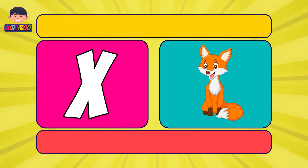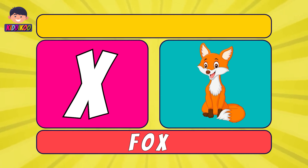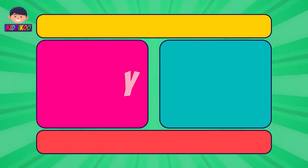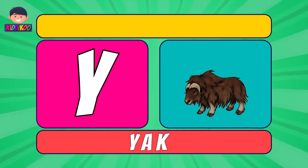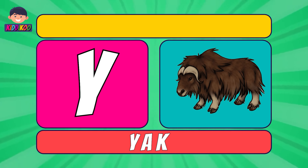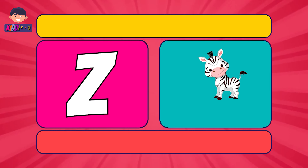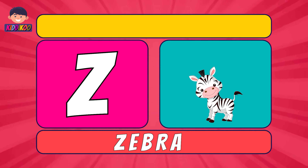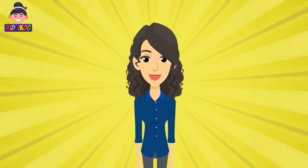Next letter is X. X for Fox. Fox. Next letter is Y. Y for Yak. Yak. Next letter is Z. Z for Zebra. Zebra.